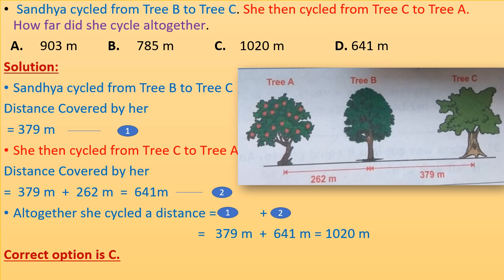Sandhya cycled from tree B to tree C, then from tree C to tree A. How far did she cycle altogether? Look at the figure. Distance from tree B to tree C is 379 meters. She then cycled from tree C to tree A: distance = 379 meters + 262 meters = 641 meters. Altogether she cycled a distance = 379 meters + 641 meters = 1020 meters. Correct option is C.